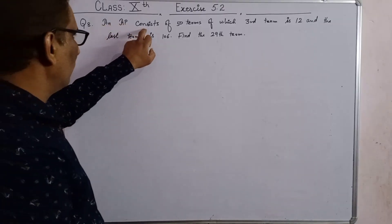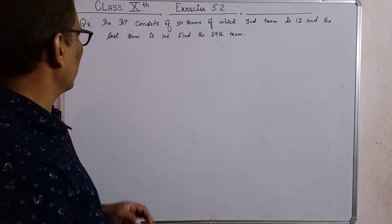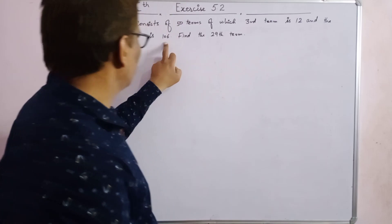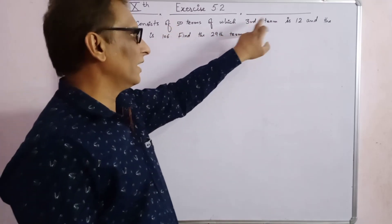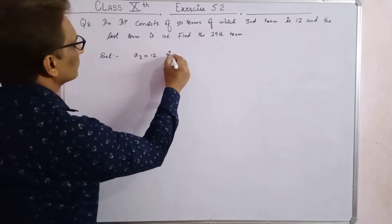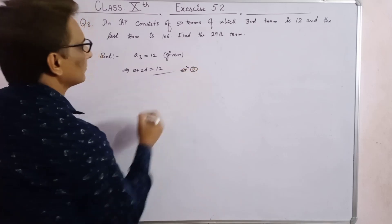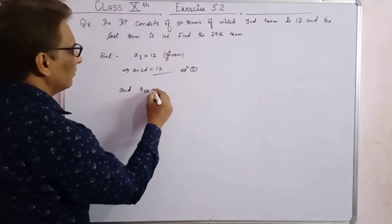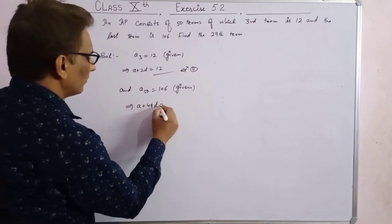Question 8: An AP consists of 50 terms, of which the 3rd term is 12 and the last term is 106. Find the 29th term. This means a50 equals 106 and a3 equals 12. From a3 equals 12: a plus 2d equals 12 — equation 1. From a50 equals 106: a plus 49d equals 106 — equation 2.